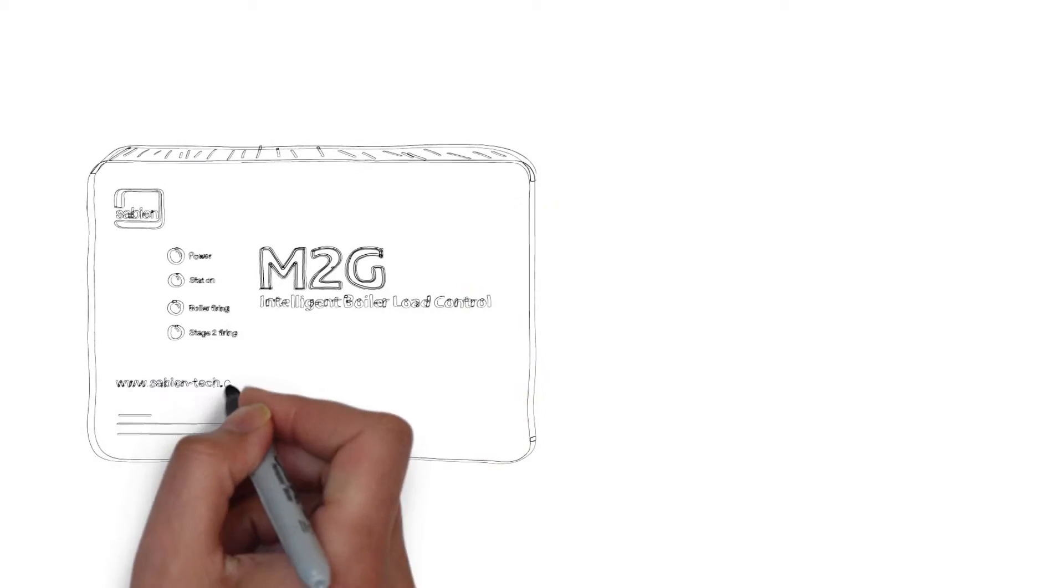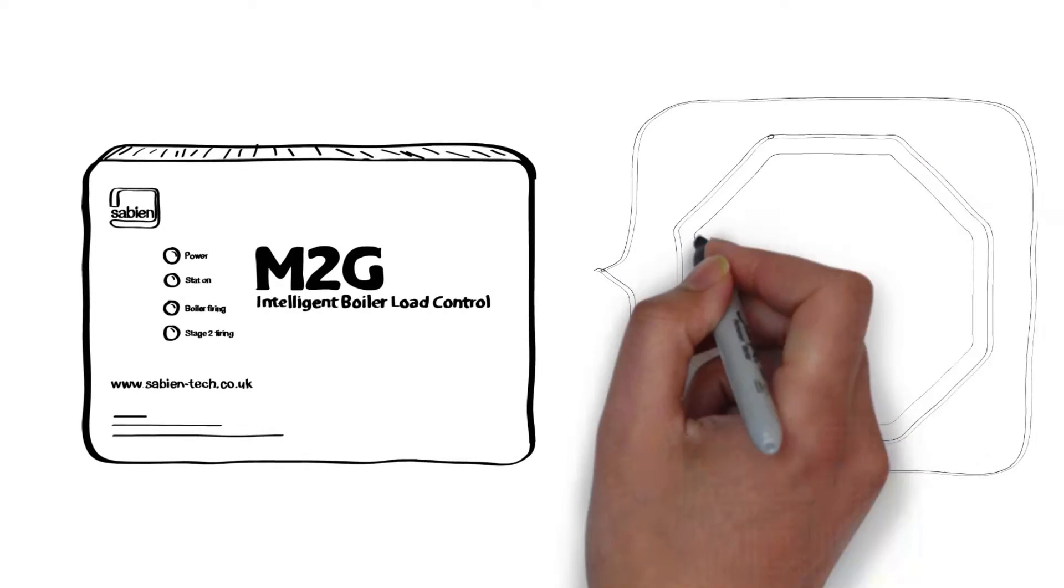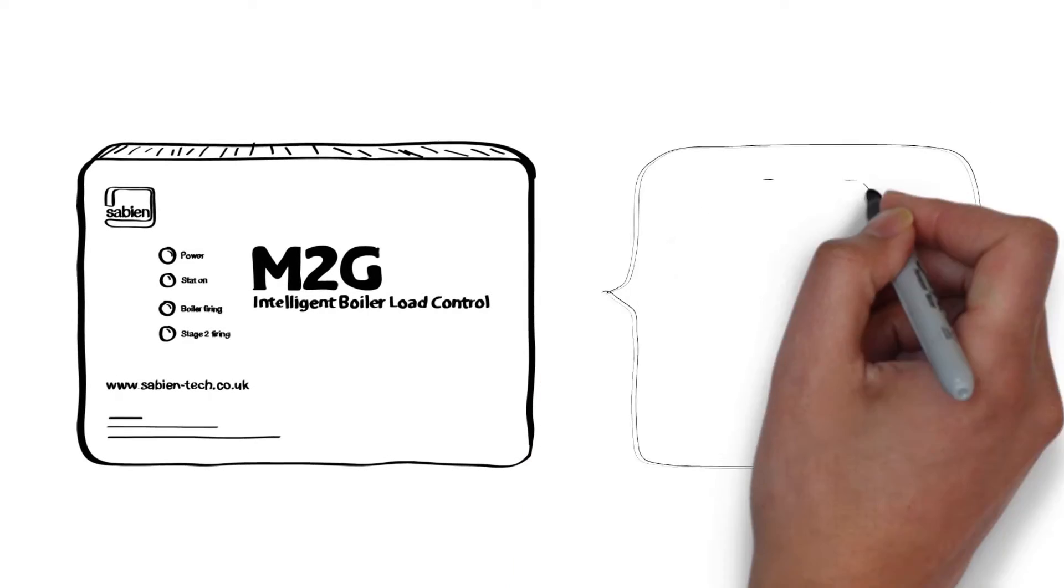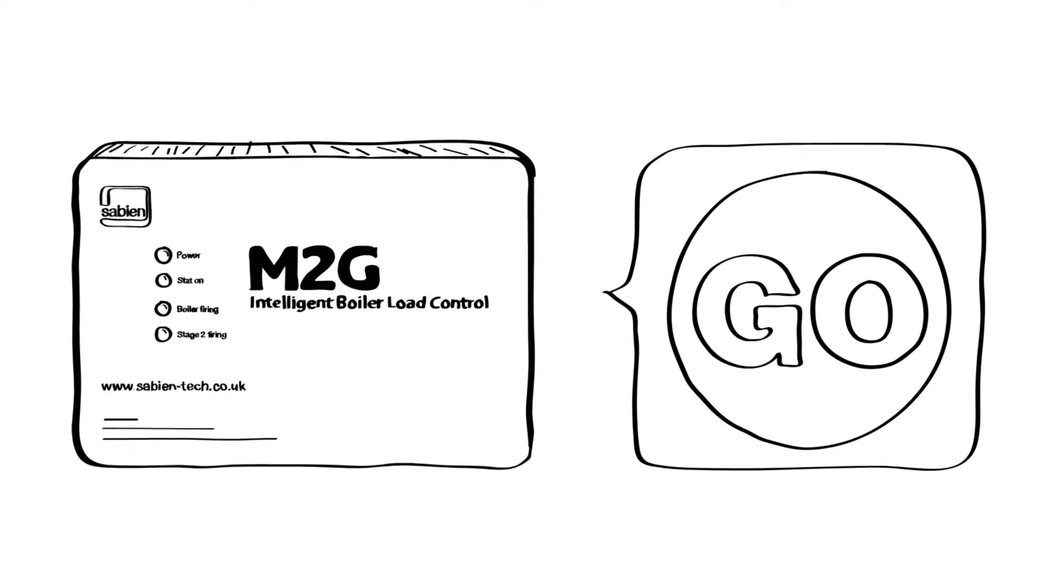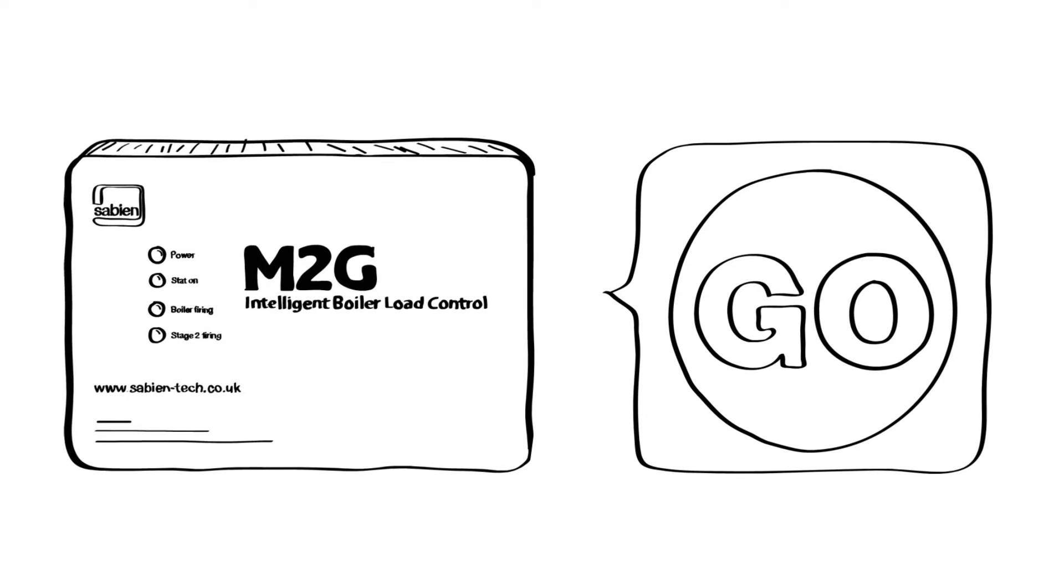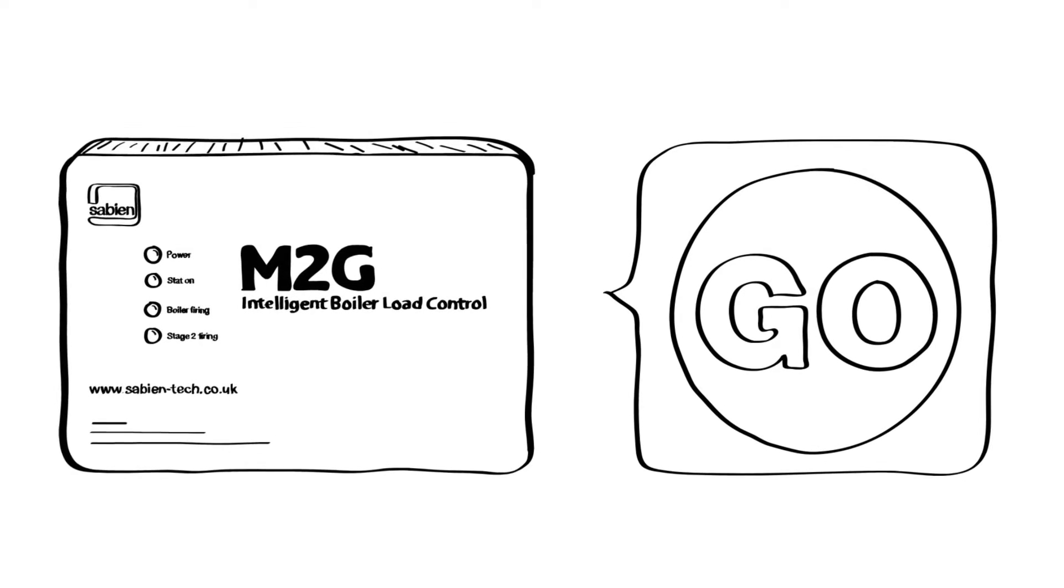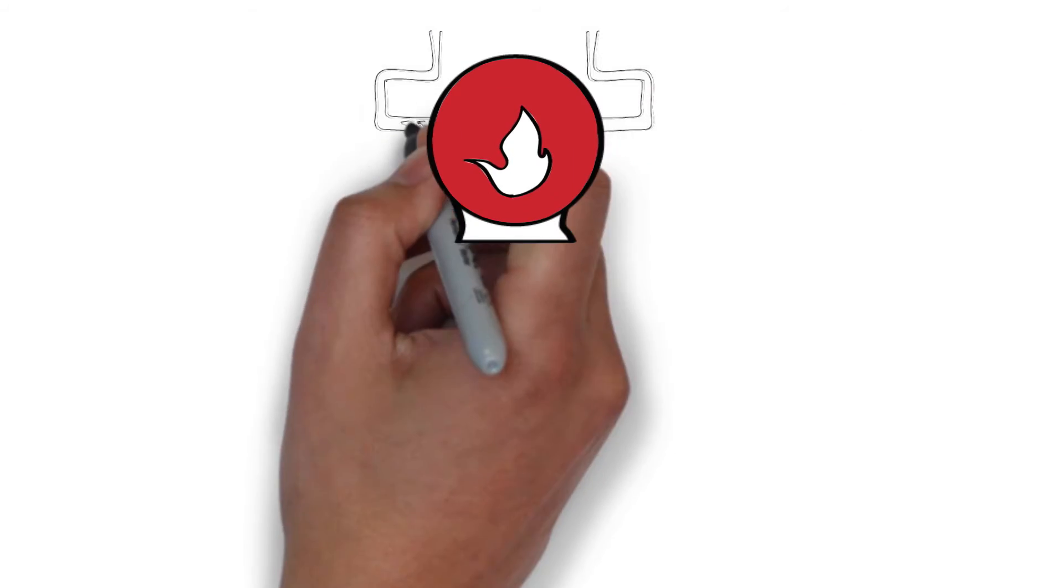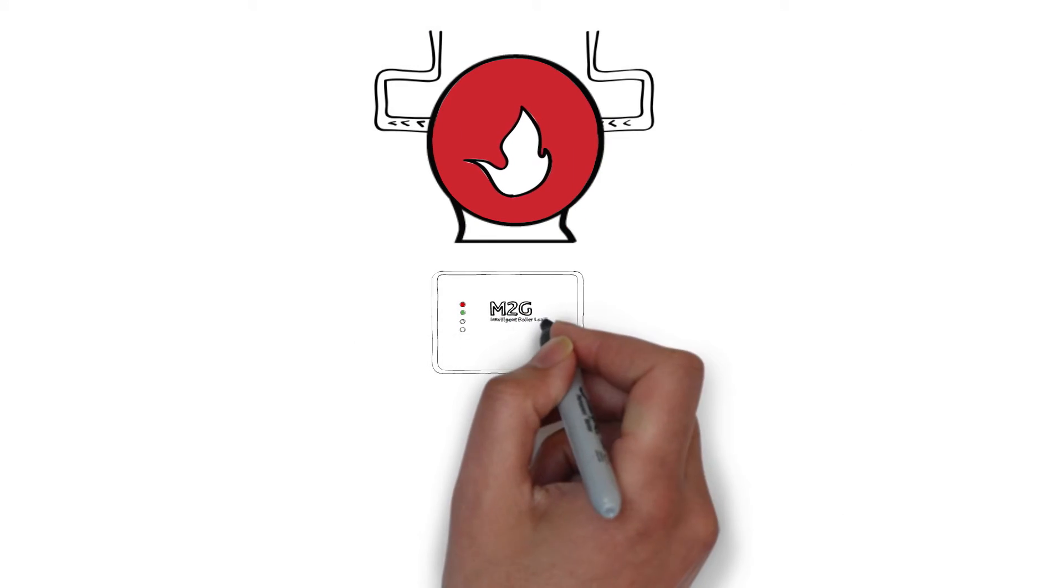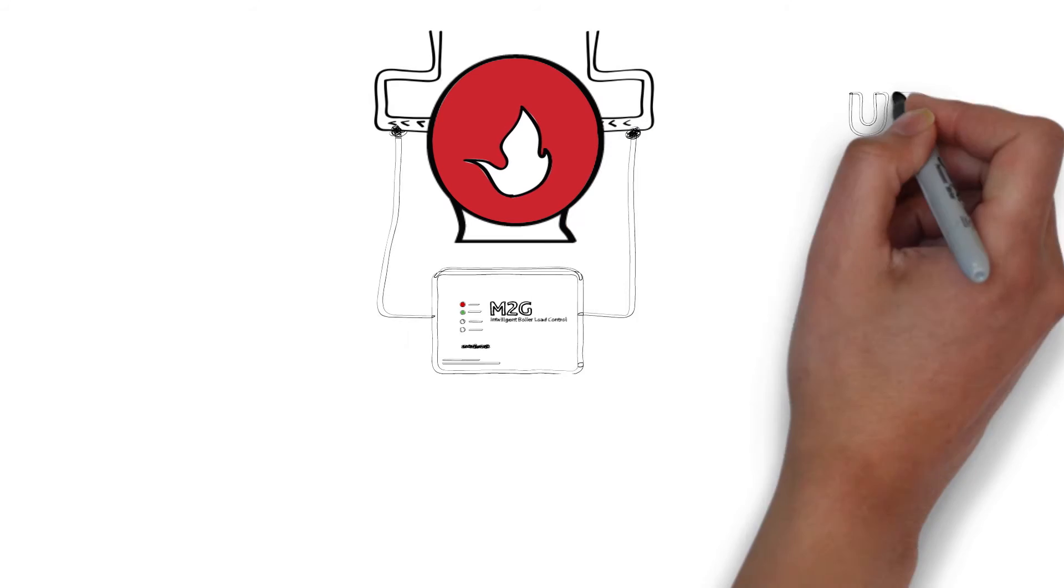M2G works in much the same way, by detecting when it's necessary for the boiler to stop and when to go. By taking measurements every second, the M2G can see if there is a real demand for heat or if the boiler is dry cycling. M2G does this by measuring the boiler's temperature as the water flows out of the boiler and as it returns.